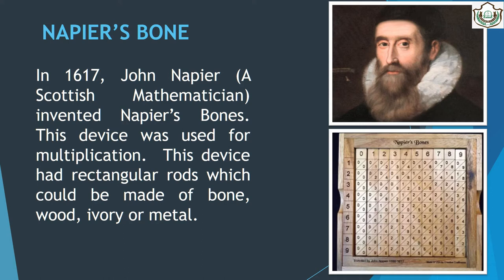In 1607, John Napier, a Scottish mathematician, invented Napier's Bones, which were used for performing addition, subtraction, multiplication, division and square roots.